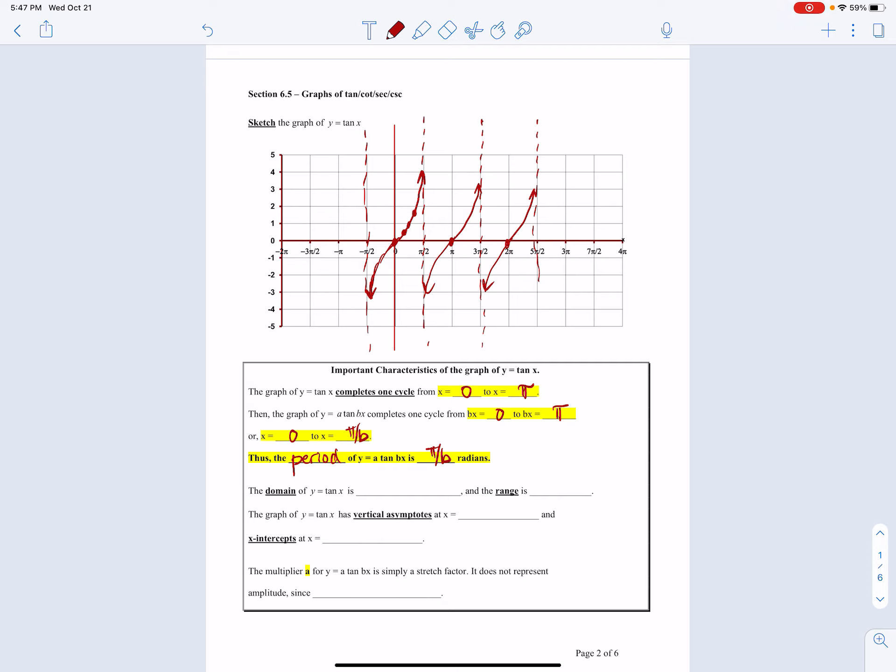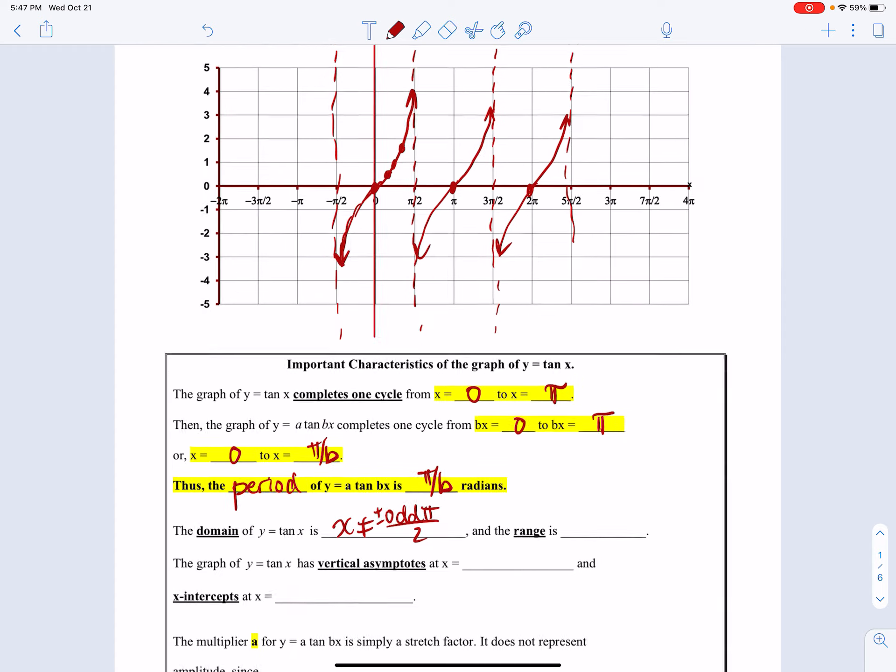With sine and cosine, the domain was all real numbers because I can plug in any value and still get something out. With tangent, we have to be careful. The domain is all x not equal to odd multiples of π/2, plus or minus. There is a fancier way to write that, which I'll talk about in a moment.